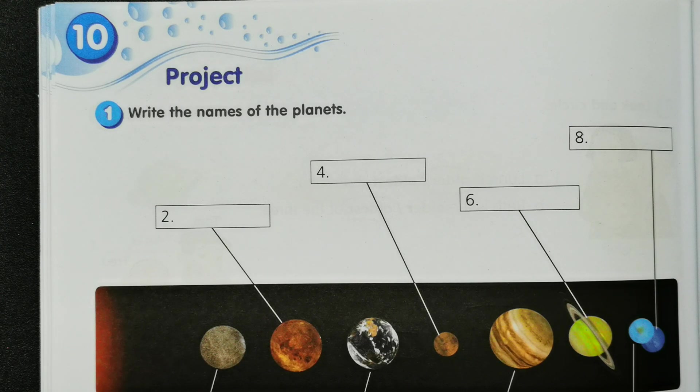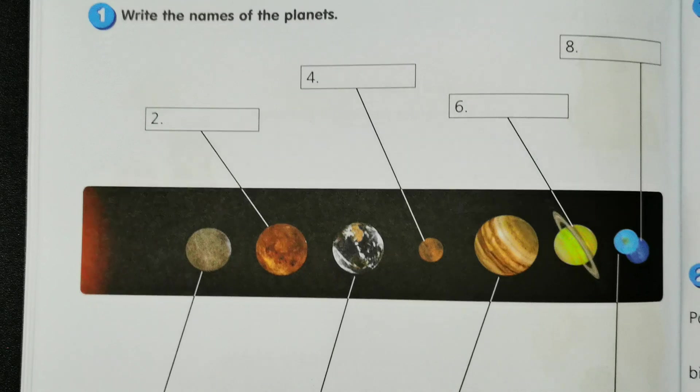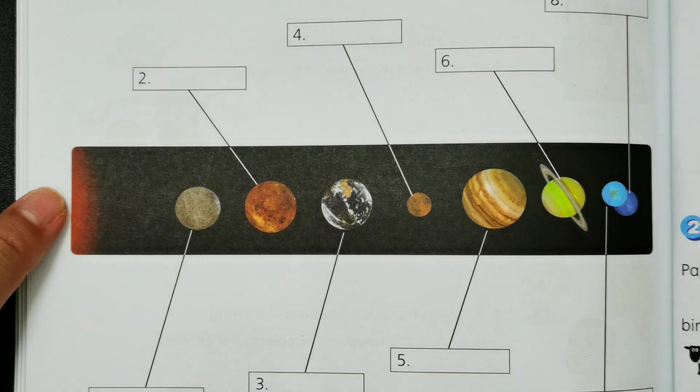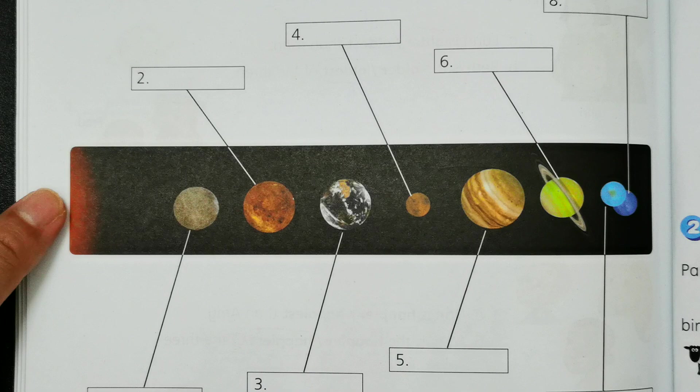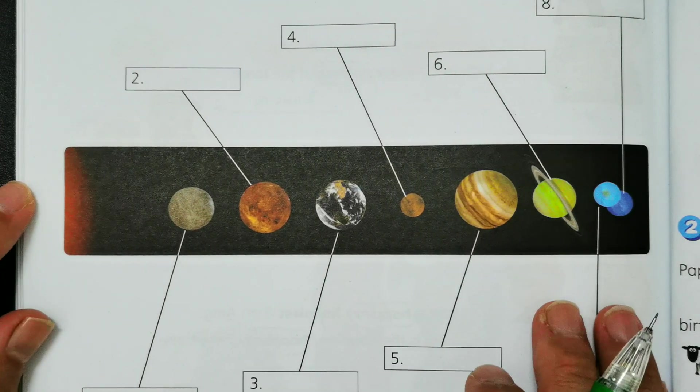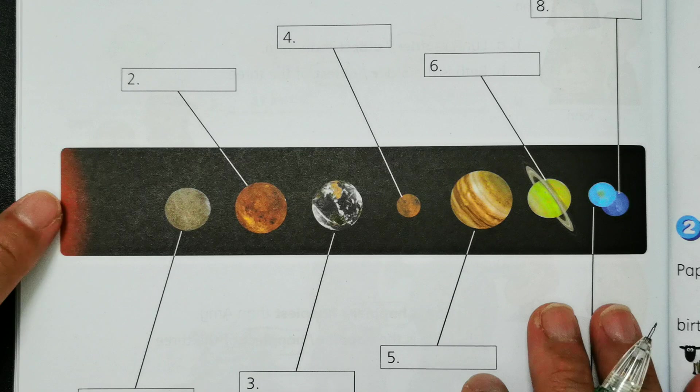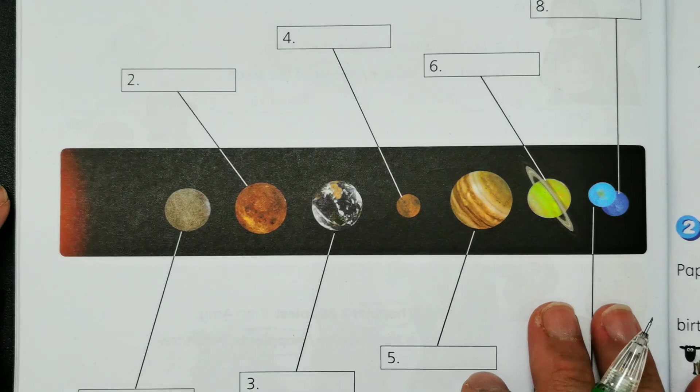So if you take a look in this picture, we have the Sun on the left and then we have a total of around eight planets in our solar system. So this is the Sun, it is a bigger star in our solar system.